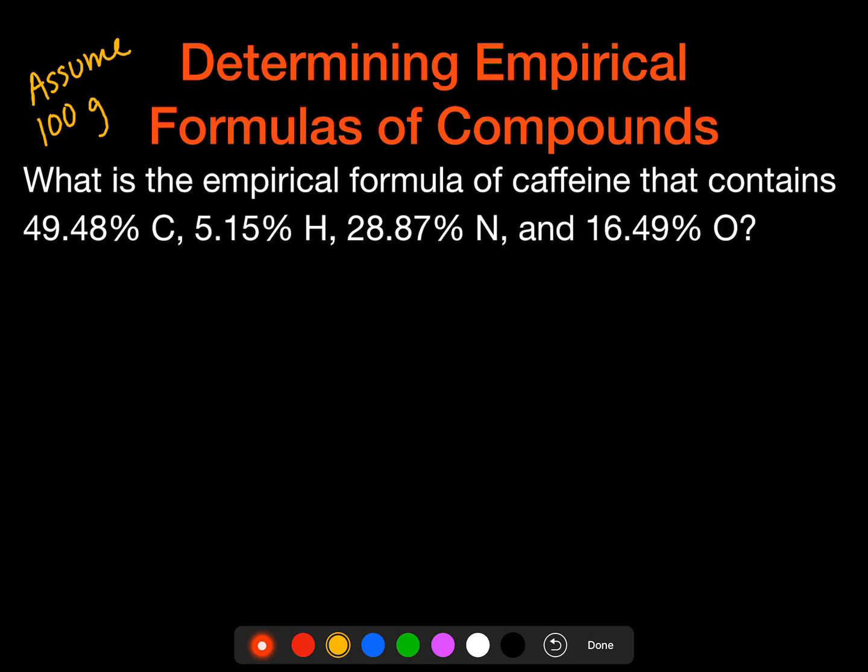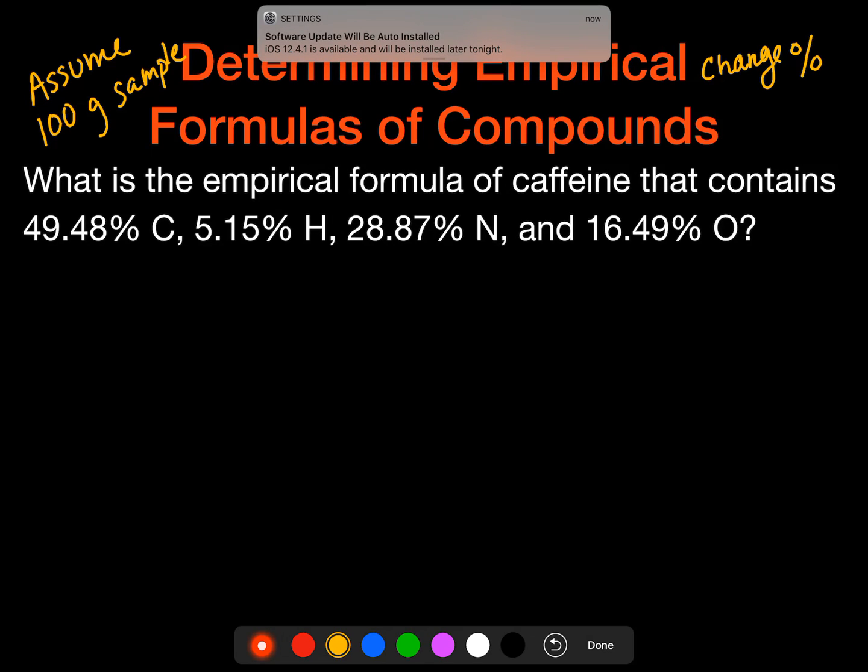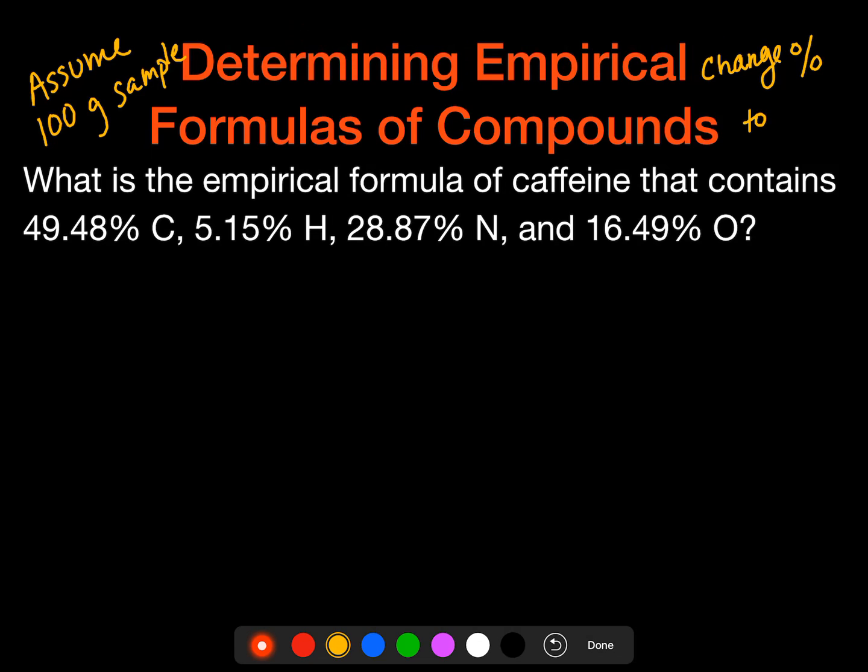Assume 100 gram sample. And when I do that, I'm going to change percents to grams. I'm just going to change each one of these percent signs into grams. If you start with grams, you don't have to do this step. You don't actually have to write that down unless you like that actual process on there.